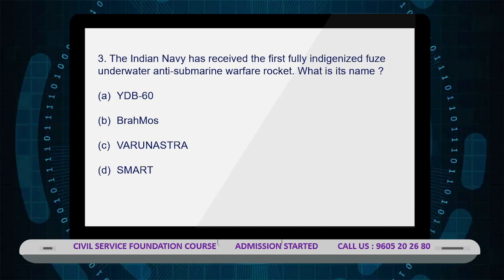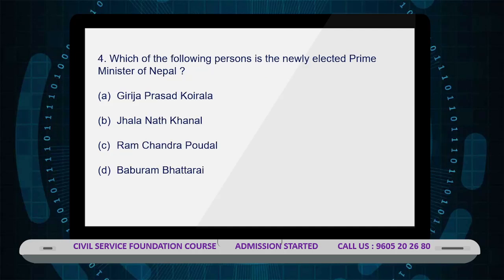YDB-60 was manufactured by the private Indian industry M/s Economic Explosives Limited, based in Nagpur. It is the first time the Indian Navy has procured an underwater ammunition fuse from an Indian private manufacturer. An anti-submarine rocket is a stand-off anti-submarine weapon used to deliver an explosive depth charge or homing torpedo from a launch ship to the vicinity of a target submarine.